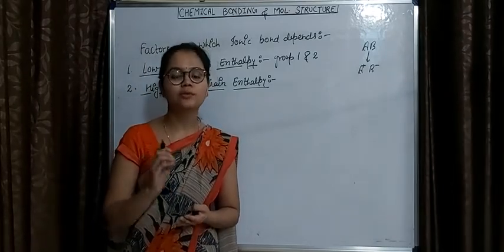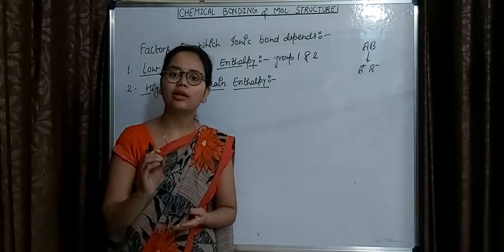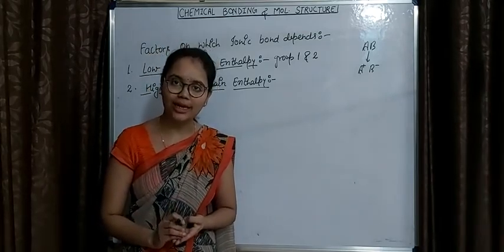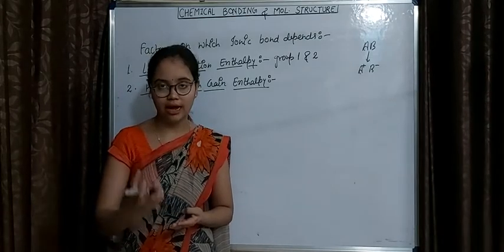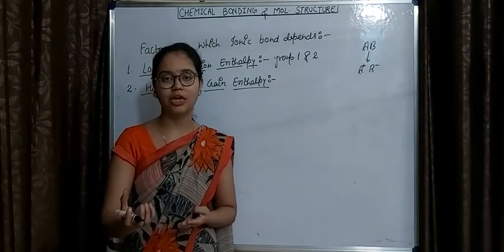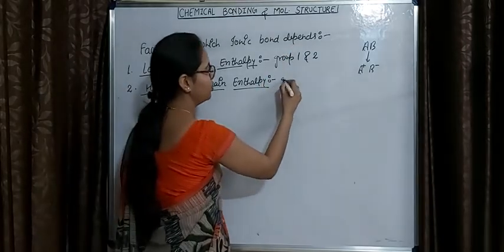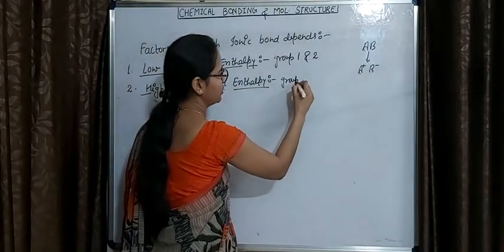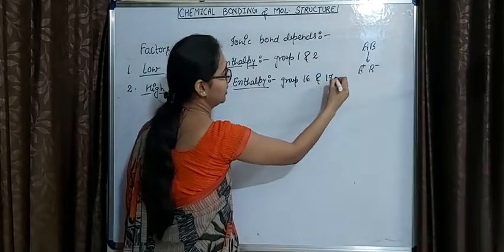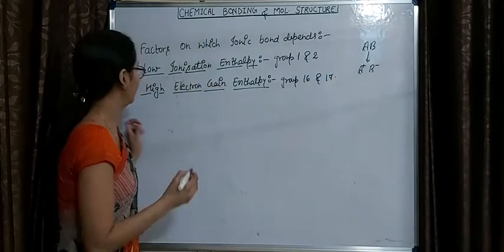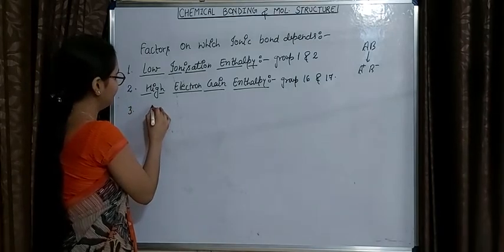The elements of Group 16 and Group 17 have very high values of electron gain enthalpy, so they have a high chance to form ionic bonds. Group 16 and Group 17 elements are the ones to note here.